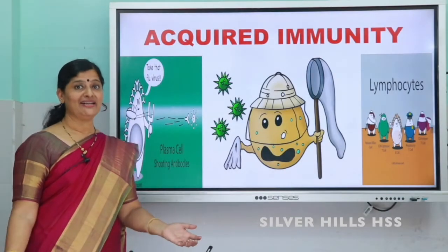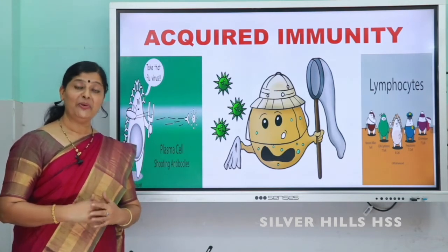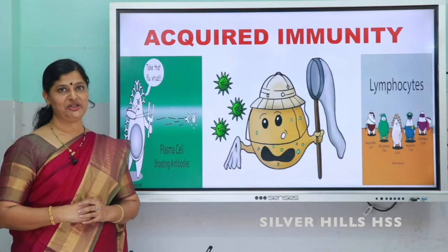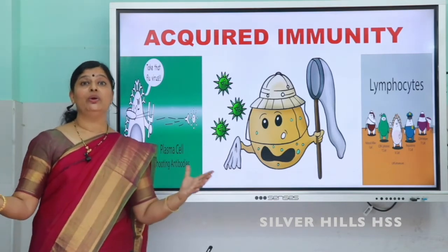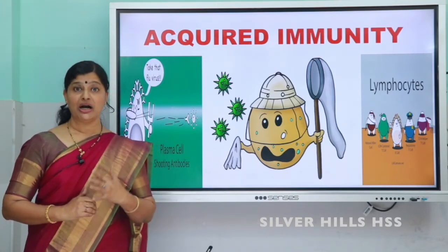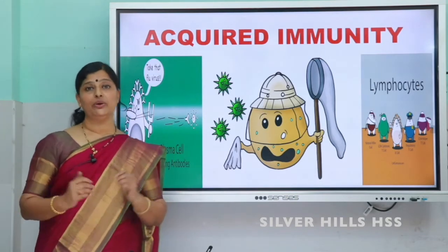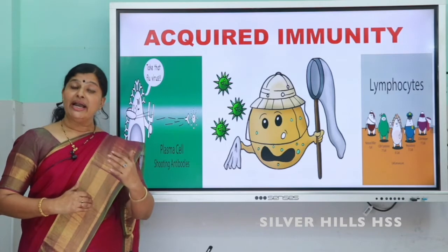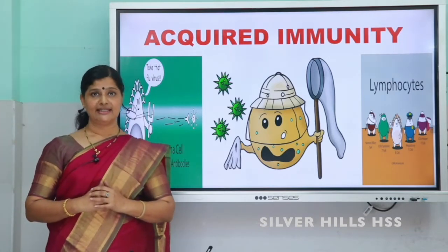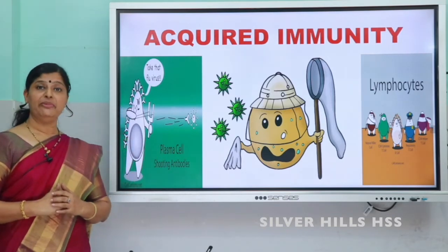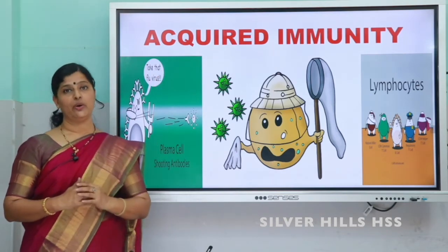Hello and welcome to our biology class. Today's topic is acquired immunity, from the lesson Human Health and Diseases of Plus Two Biology. Our body has a very good defense system, just like our country. The immunity that we get can be divided into two categories: the first is called innate immunity, and the second one is called acquired immunity, which we are going to study.